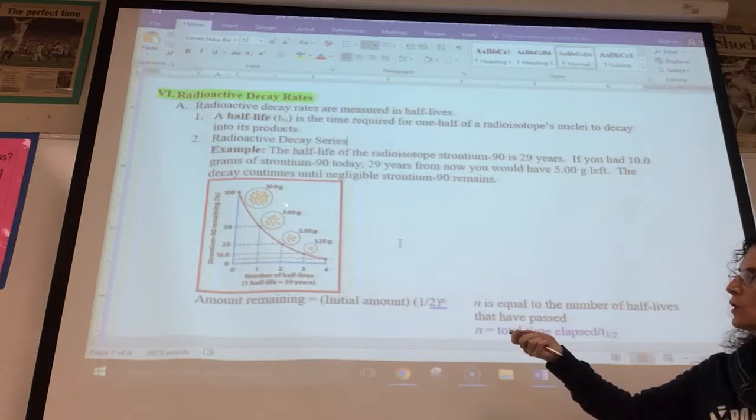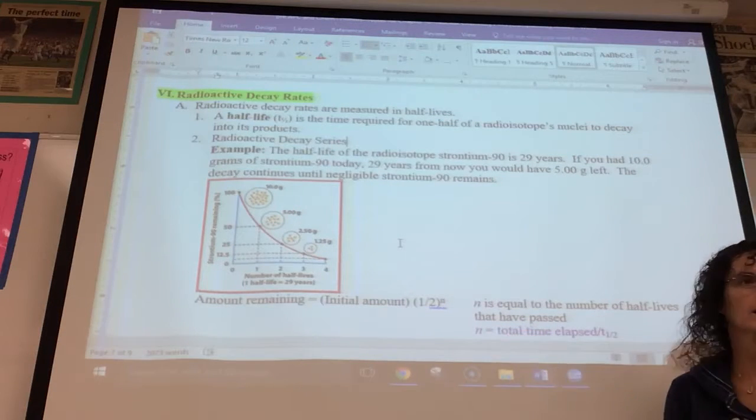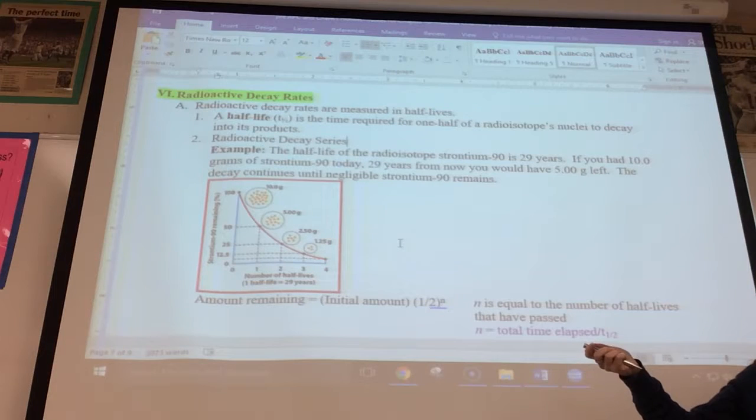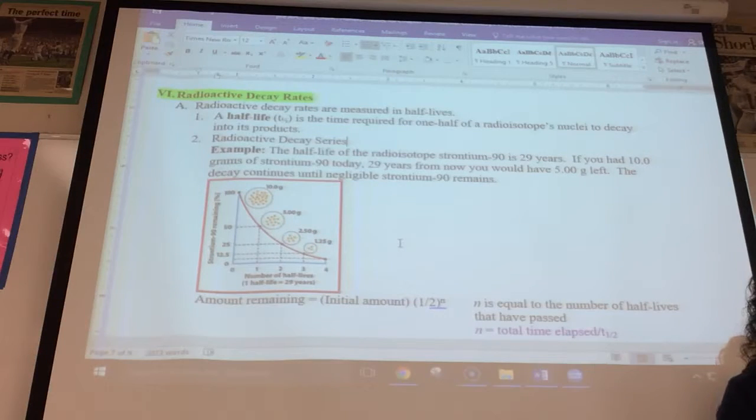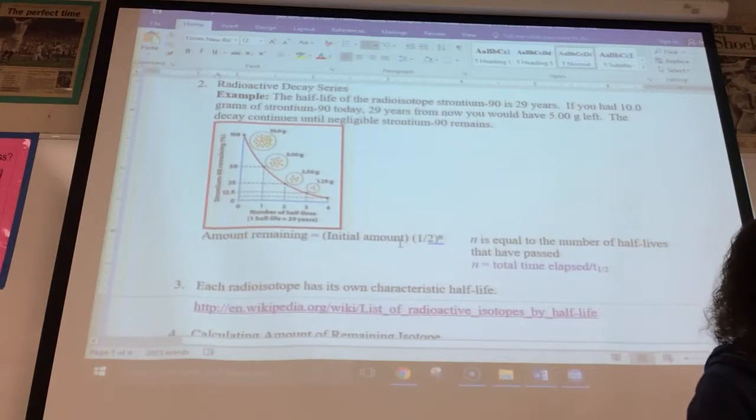If it goes through another half-life, you divide 5 by 2 and you'll have 2.5 grams, so that would be 58 years later. And then another half-life would get you to half of that or 1.25 grams. So if you know the half-life and how much substance you started with, you can figure out the amount remaining after a certain period of time or a certain number of half-lives.